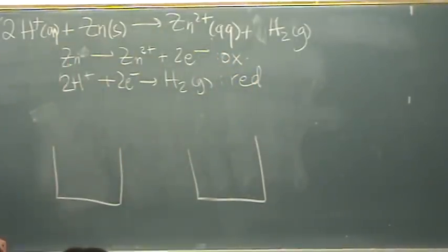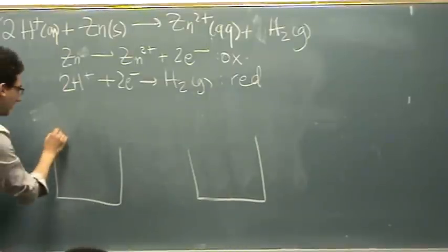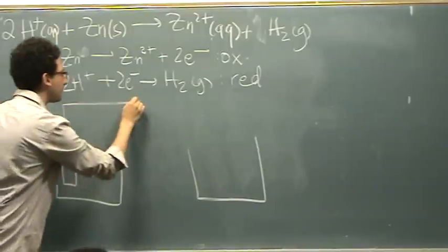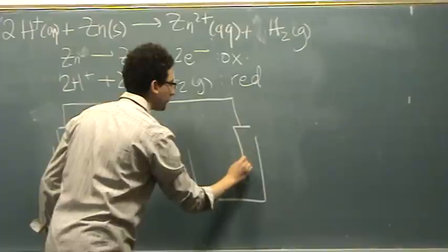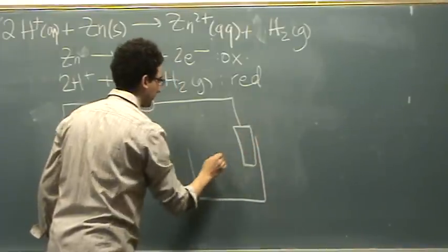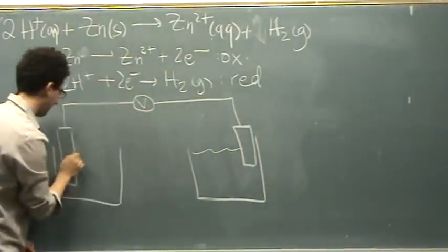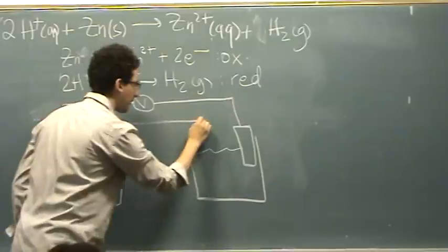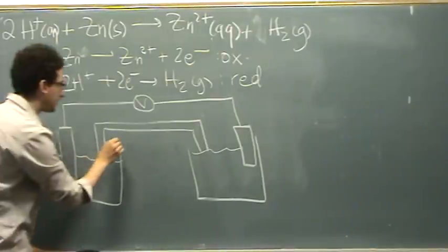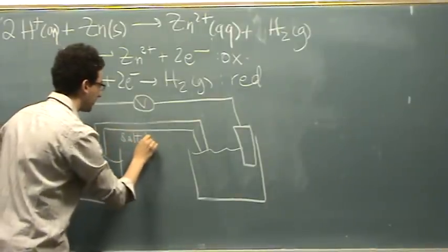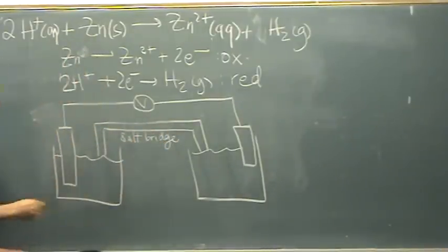So the top one's going to be the anode, the one on the left hand side. Now you can still draw it in your template. So I'm drawing each piece down around the salt bridge. So there's my template. It doesn't really matter what I'm doing. In most cases, it's going to look like this.